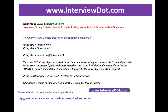Whenever you create string objects using a string literal, JVM will check whether the string literal already exists in the string constant pool. If it is available — very important — if available, then it adds a reference to the new object creation request rather than creating a new one. First time the object gets created, but the second time you try to create one more, it checks whether it already exists. If it does, it marks a reference to it and does not create a new one.